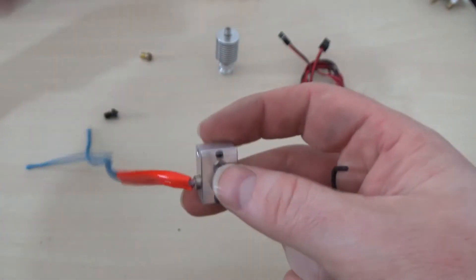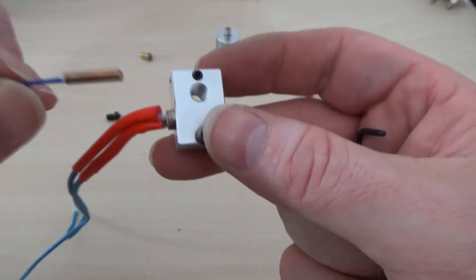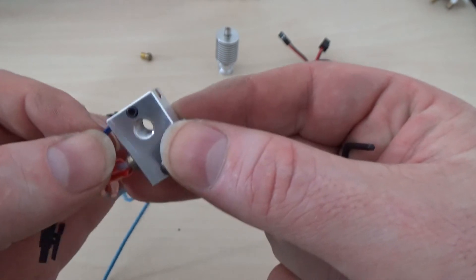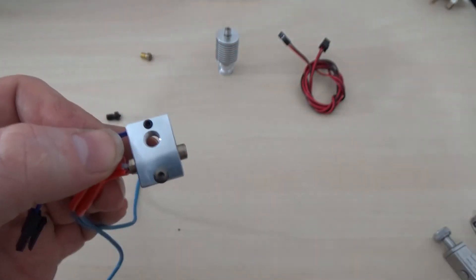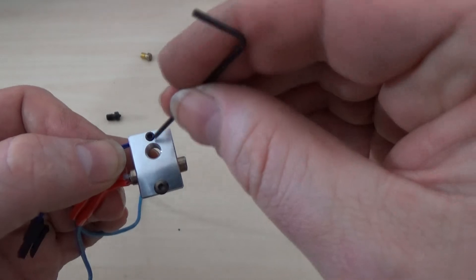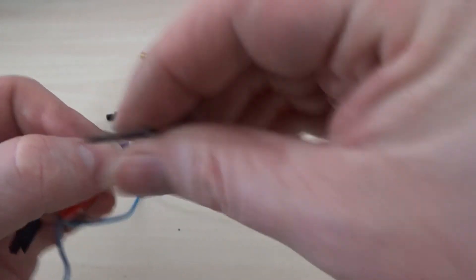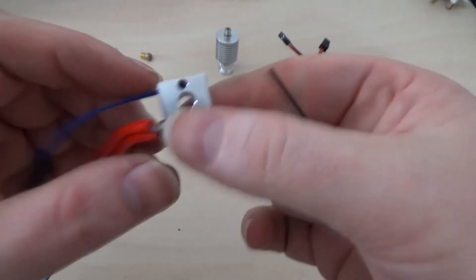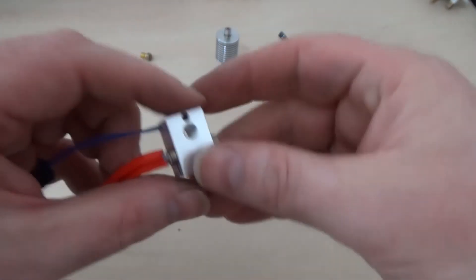Right, now you take your thermistor cartridge, slide it in that hole. Now you'll notice the thermistor cartridge will go right in. Try and get it in, but don't get any of it sticking out. Use the 1.5mm Allen key to tighten that up. Don't crush this thing, because you will crush the thermistor cartridge. Just tighten it up until it's gripped.